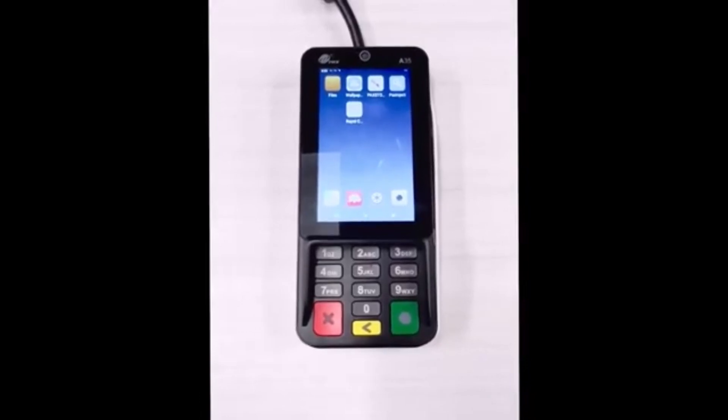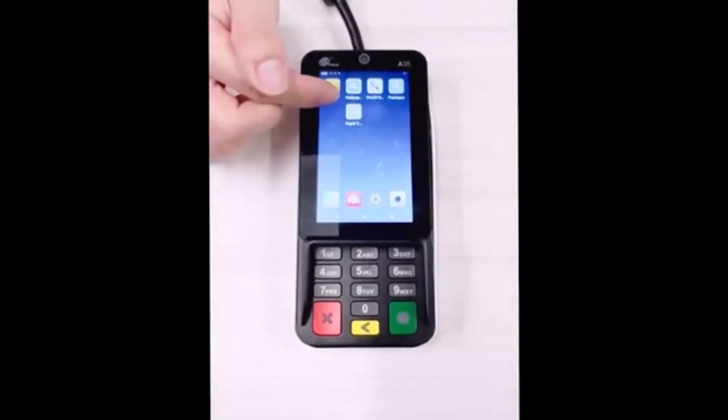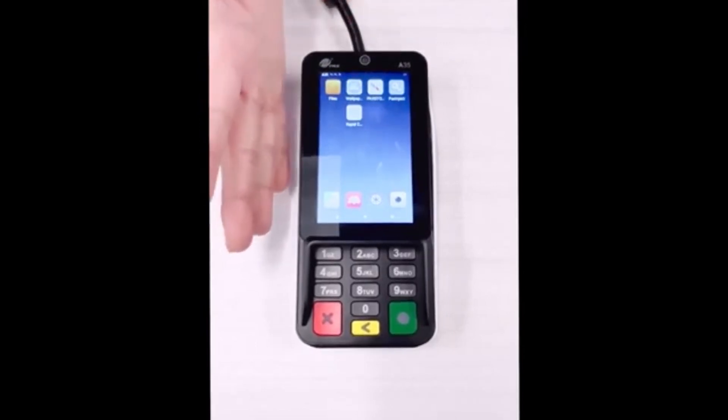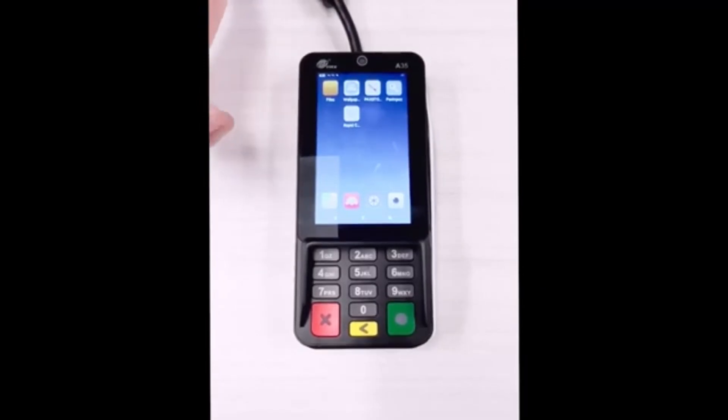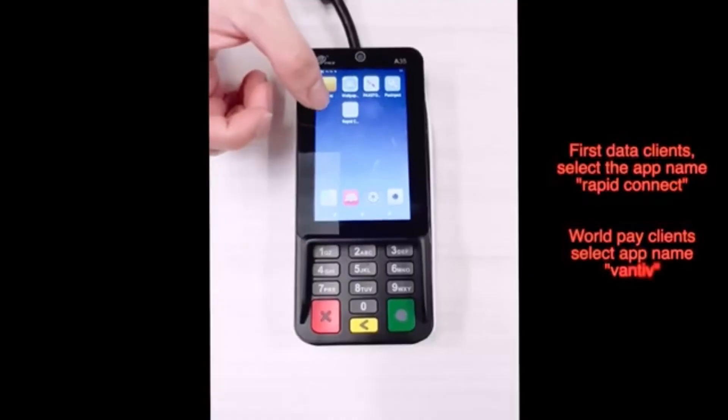So now that we have the A35 powered on, we'll go ahead and click on the Rapid Connect app here. This will be available if it's on the First Data platform. If you're going to be on WorldPay, you're going to look for an app called Vantive.